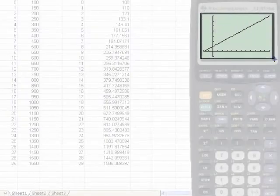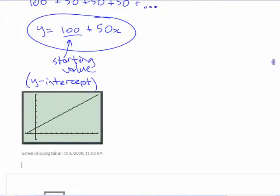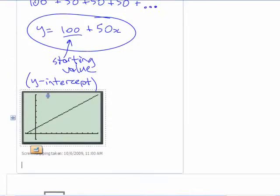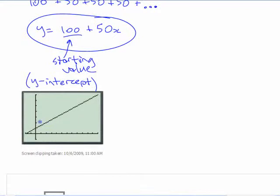You have an initial value at the y-intercept of 100, and this value right here, this is 100. And this, the other thing just means for every 1 over, you're going up 50, right? 1 over, 50 up.